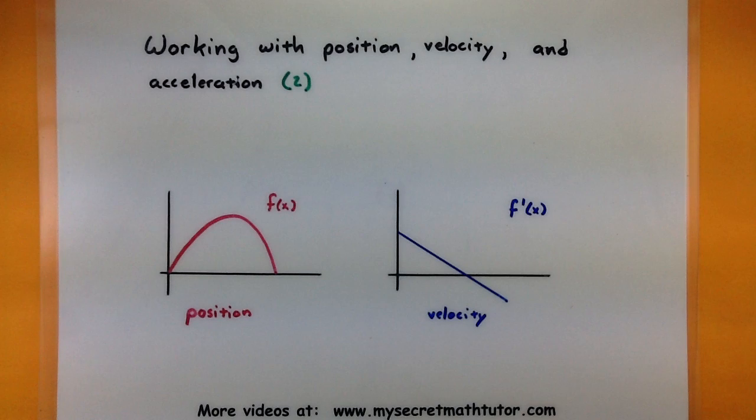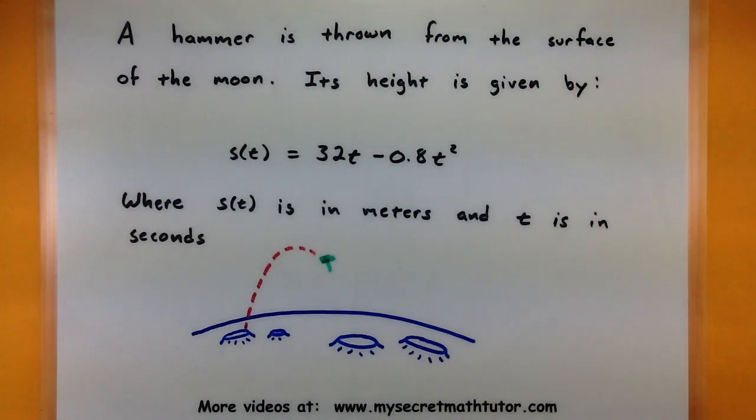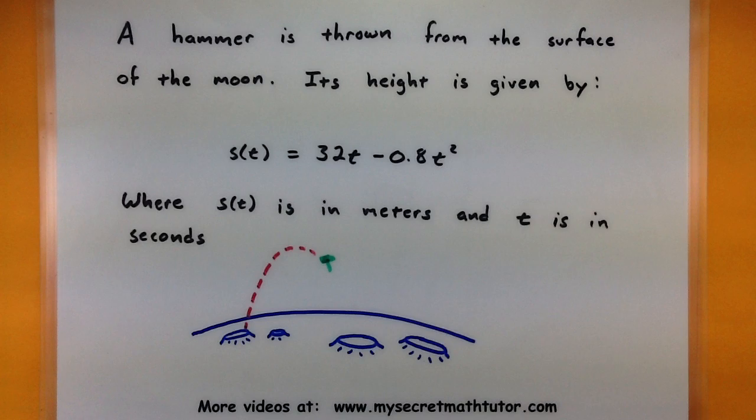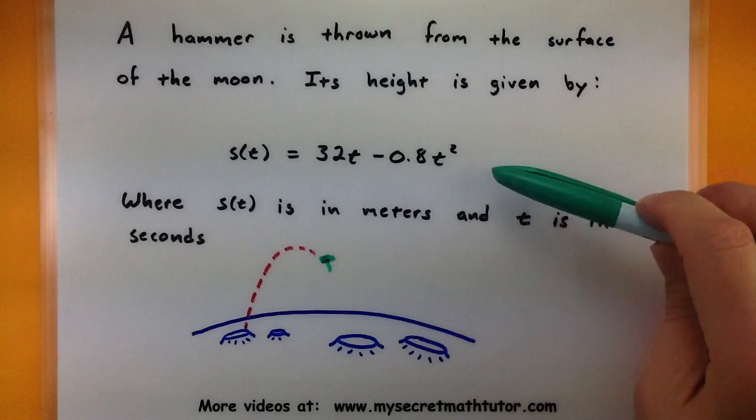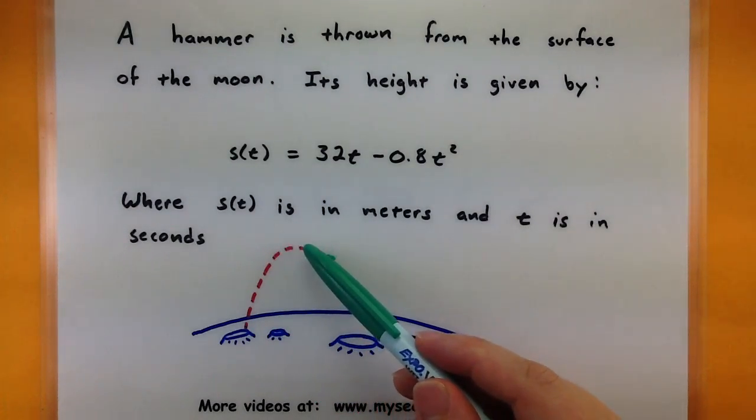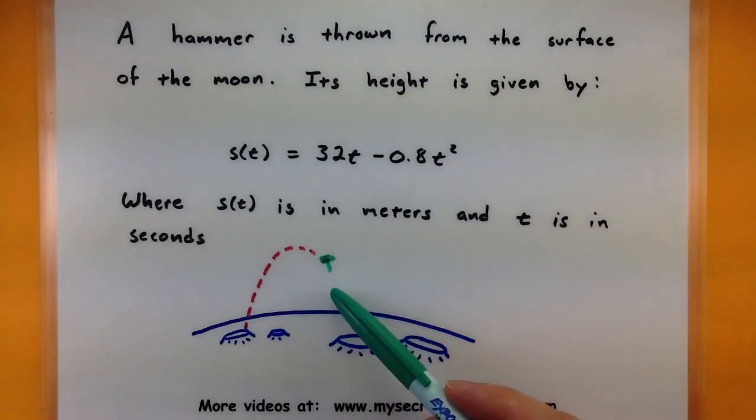Let's check out this problem and see how we can pick it apart. In this problem we have a hammer that is thrown from the surface of the moon, and its height is given by the following function: 32t minus 0.8t squared. The way you want to interpret this function is that s is giving us the height of this hammer in meters, and t is giving us the time after t seconds. So we are throwing up a hammer, and it would eventually peak at some spot and come back down.